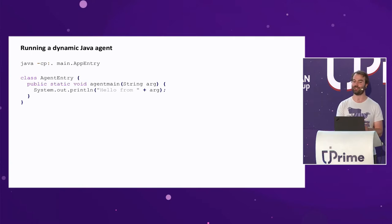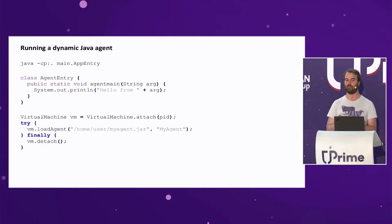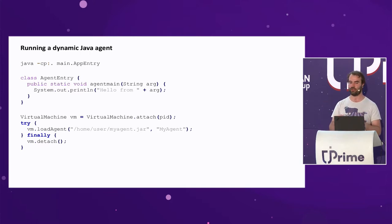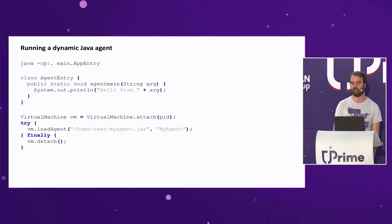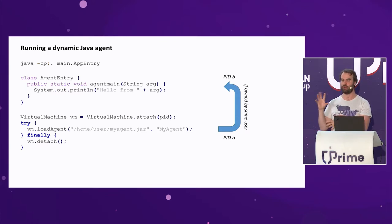For AgentMain, you don't specify it on the command line. Instead, there's an API in the JVM — you call VirtualMachine.attach with the process ID of the target Java process. From a different Java application, you say I want to add my agent to this already existing process, then detach. Any Java process running under the same user can be attached to. You can enrich any JVM you own at a later point, and this works with any process.